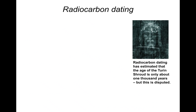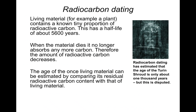Radiocarbon dating can be used to estimate the age of materials such as the Turin Shroud, which is estimated to be approximately 1,000 years old. A living material, such as a plant, contains a known tiny proportion of radioactive carbon - carbon-14 - which has a half-life of approximately 5,600 years. When the material dies, it no longer absorbs any more carbon, so the amount of carbon-14 decreases. The age of once-living material can be estimated by comparing its residual radioactive carbon content, allowing us to use the amount of carbon-14 in a sample to determine how old it is.